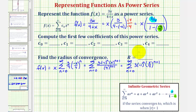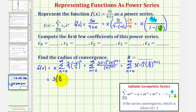Now let's find the first several terms to determine coefficients c0 through c4. When n equals 0, the first term is 3 times negative 1 to the 0, times x over 4 to the first power, giving us 3 times x over 4. When n is 1, the term is negative, so we have minus 3 times x over 4 to the second power.